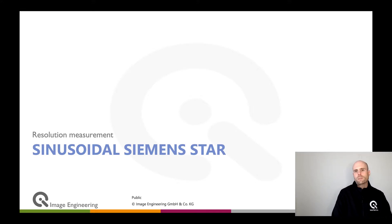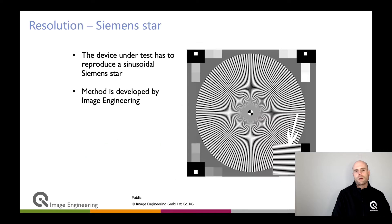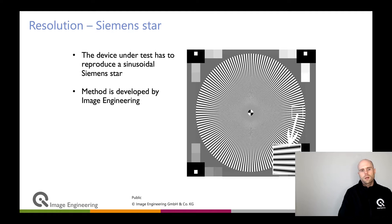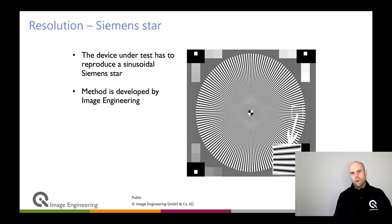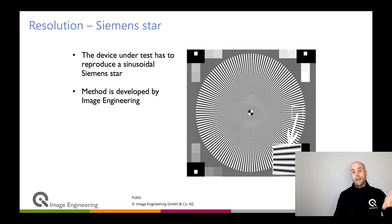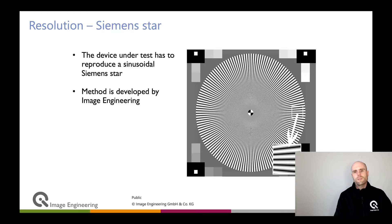Which methods do we actually have to measure resolution? The first one is the SSFR method that uses the Siemens star. The device in the test reproduces a sinusoidal Siemens star — if you look over the radius, it's not black and white but a sine wave. That is a core property of these test targets, and it was actually developed here at Image Engineering. The ISO technical committee picked it up later, so it became an ISO standard.